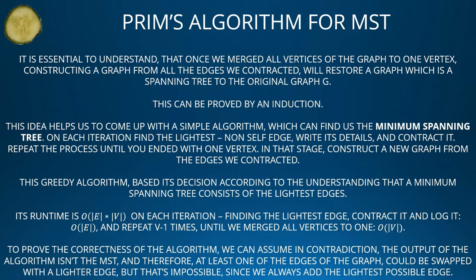This idea helps us come up with a simple algorithm to find the minimum spanning tree. On each iteration, find the lightest non-self edge, write its details, and contract it. Repeat the process until you end with one vertex. At that stage, construct a new graph from the edges we contracted. This greedy algorithm bases its decision on the understanding that a minimum spanning tree consists of the lightest edges. Its runtime is O(E × V) — on each iteration, finding the lightest edge, contracting and logging it takes O(E), repeated V minus one times until all vertices are merged.